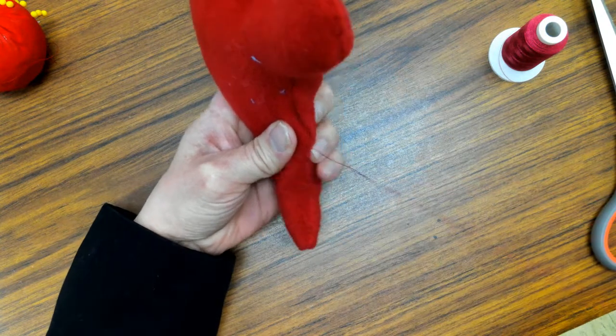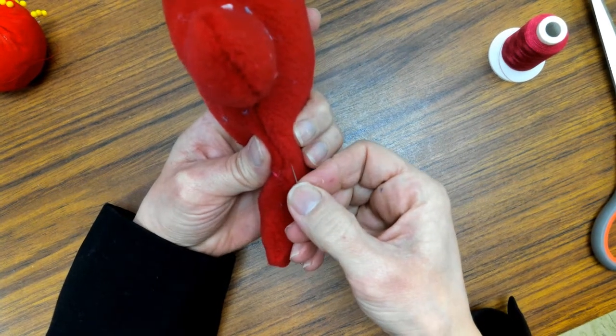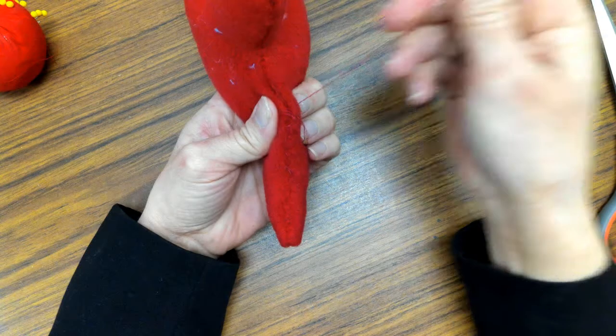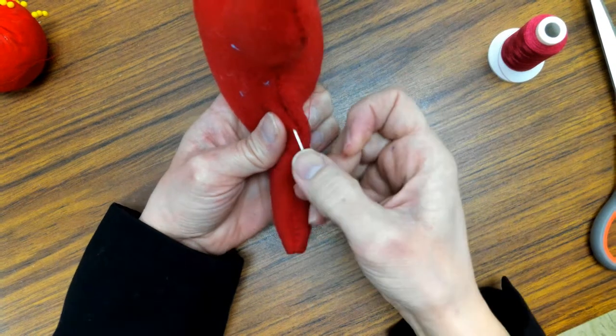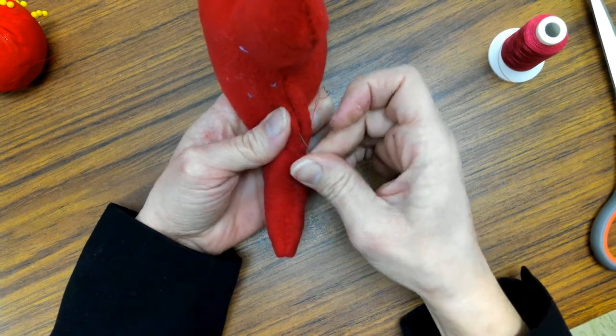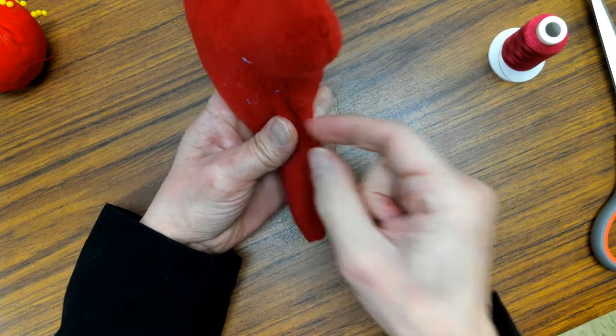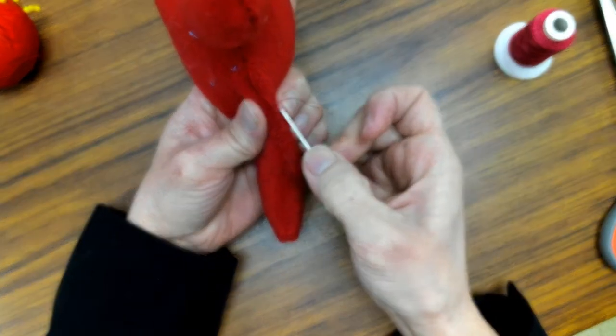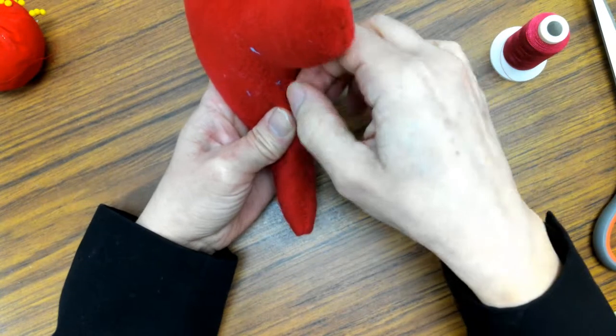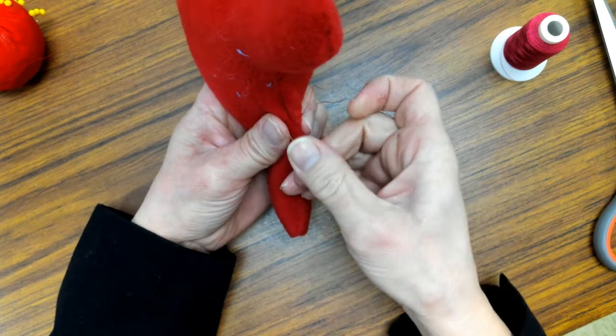And at the end, you're going to tie it off. And I'll show you how to do that as soon as I get to the end. One side, and then the other. So, first of all, make sure that you sew all the way to the end.